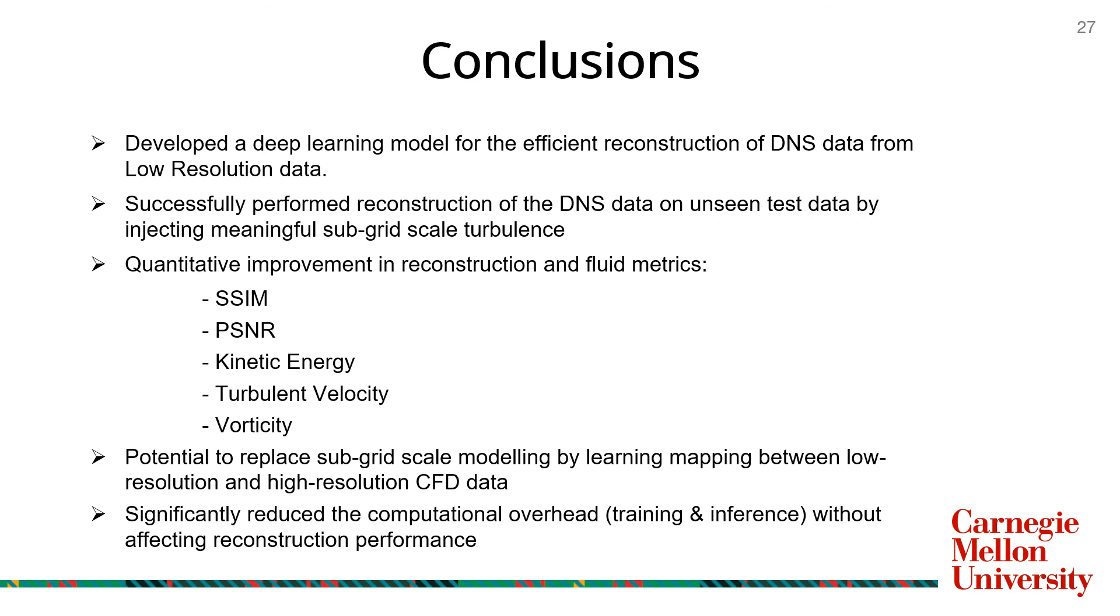Additionally, our model is able to inject meaningful sub-grid scale turbulence to the CFD simulations performed on coarse grids. Hence, by mapping LES-like low resolution solutions directly to DNS, SRDNSNet can potentially eliminate the need for sub-optimal empirical models for sub-grid scale turbulence. Finally, our network makes use of highly computationally efficient deep learning architecture which greatly improves its training and deployment time. In conclusion, our research serves as an important initial step towards demonstrating the effectiveness and future potential of such super-resolution based reconstruction models. Such models can efficiently increase solution fidelity of CFD simulations while mostly mitigating the associated computational costs.